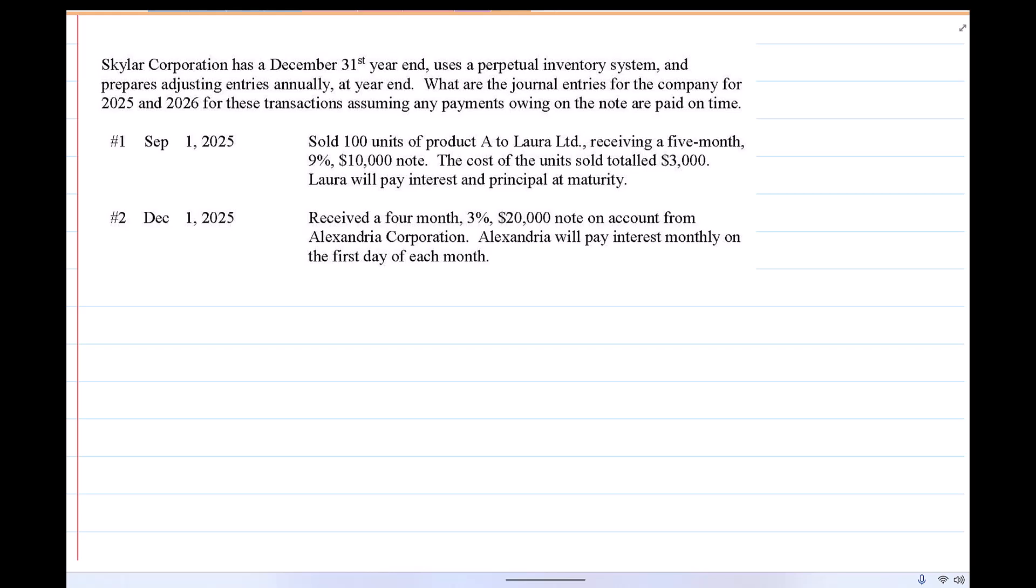Let's do a notes receivable and a couple of transactions with respect to that. Schuyler Corporation has a December 31st year end, uses a perpetual inventory system and prepares adjusting entries annually at year end. What are the journal entries for the company for 2025 and 2026 for these transactions assuming any payments owing on the note are paid on time?